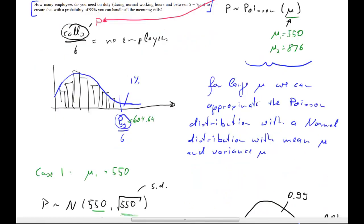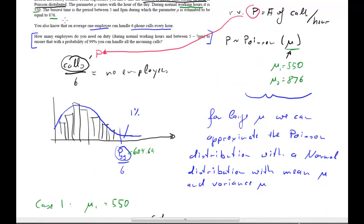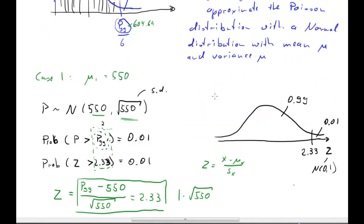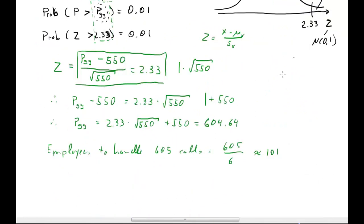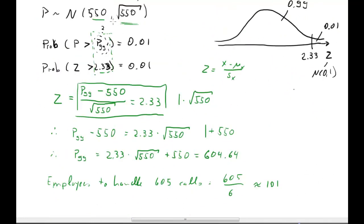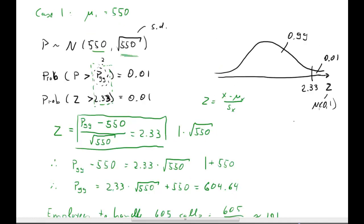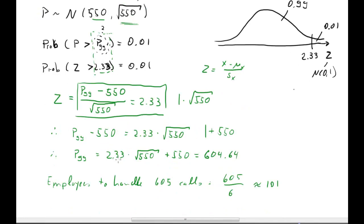For peak hours, our parameter is mu2 = 876. What changes is the distribution — we have a different mu. But the Z value of 2.33 stays the same, since that was determined in the standard normal world without involving mu. So we only need to repeat the back-translation step with the new mu.